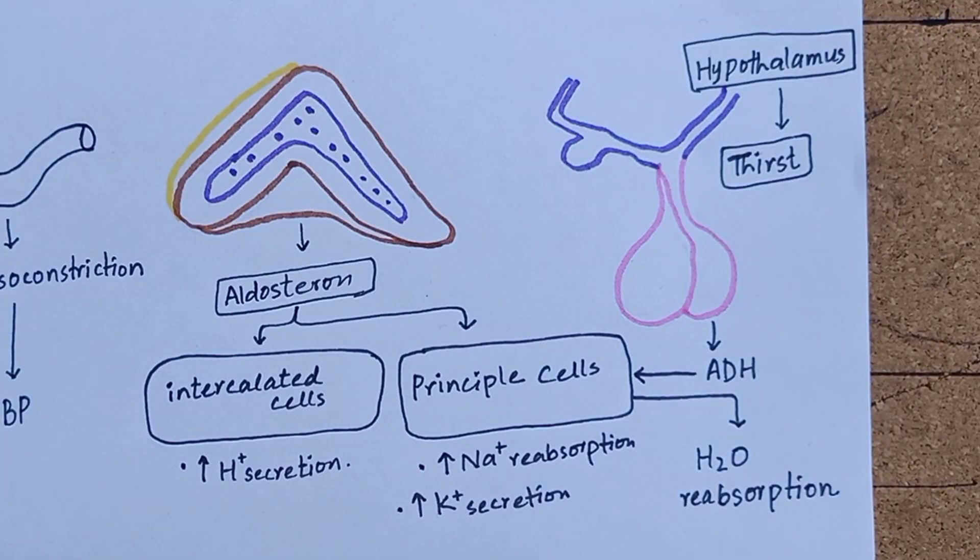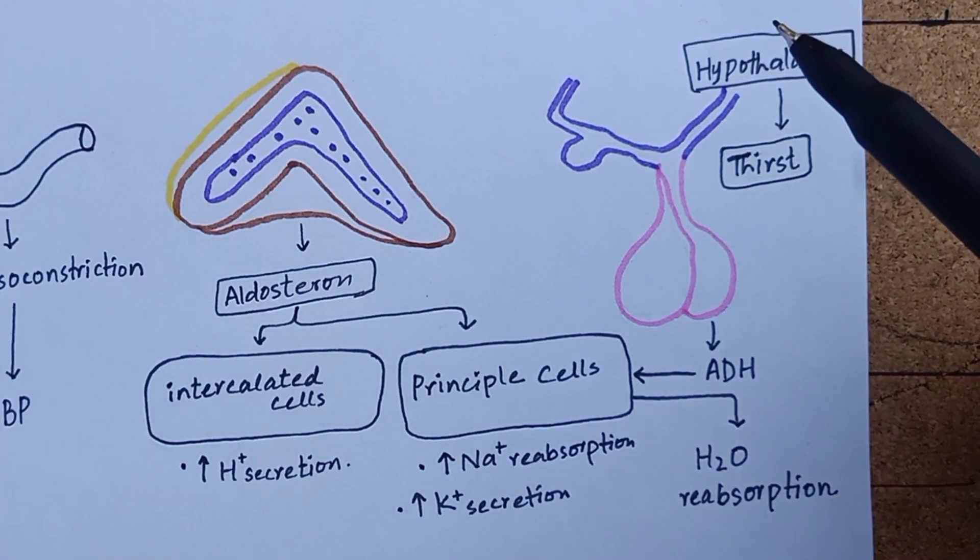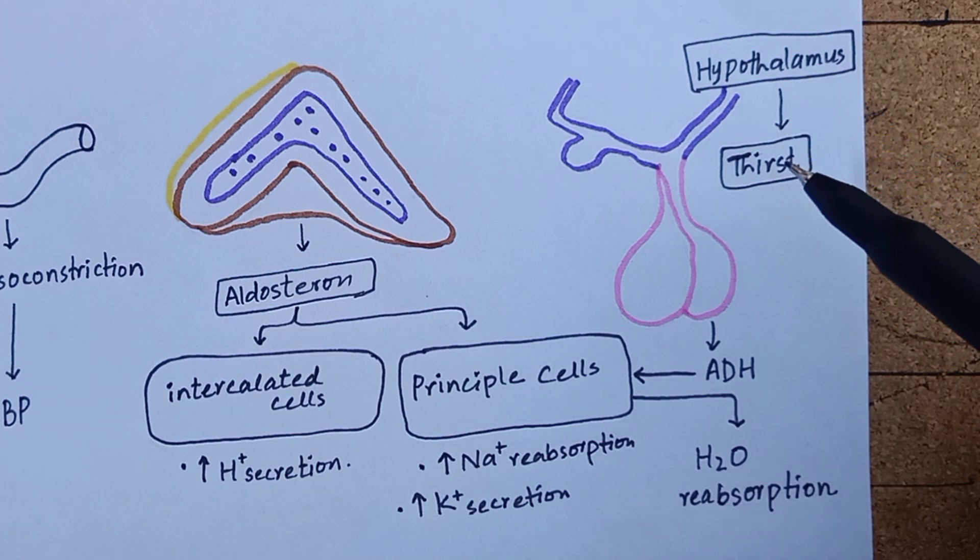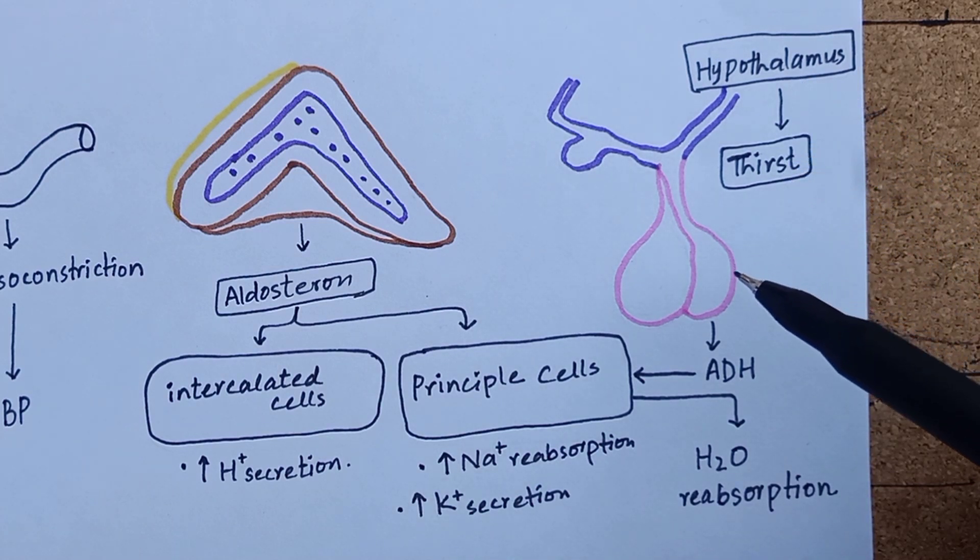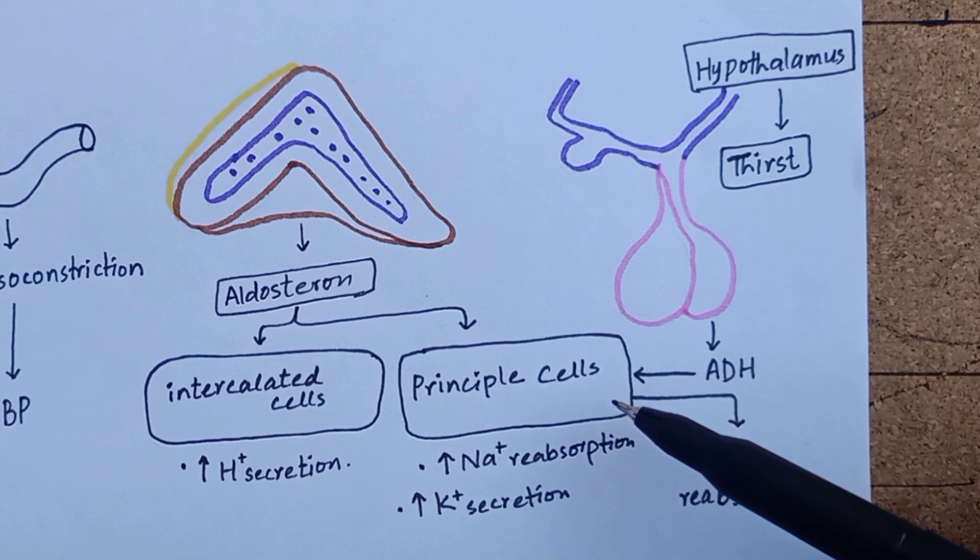Finally, angiotensin 2 binds to the hypothalamus, stimulating thirst center and stimulating the release of antidiuretic hormone by posterior pituitary gland.